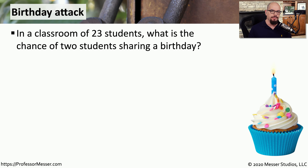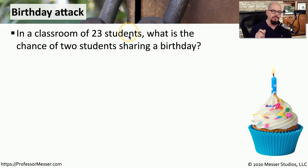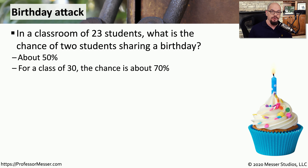One type of attack is the birthday attack, and it's based around this particular problem: you have a classroom of 23 students — what is the chance that two students share a birthday? The answer is 50%, which is a pretty high number considering there are only 23 students. With 30 students, this increases to about 70%, because we're comparing every student to every other student to see if there's a shared birthday.